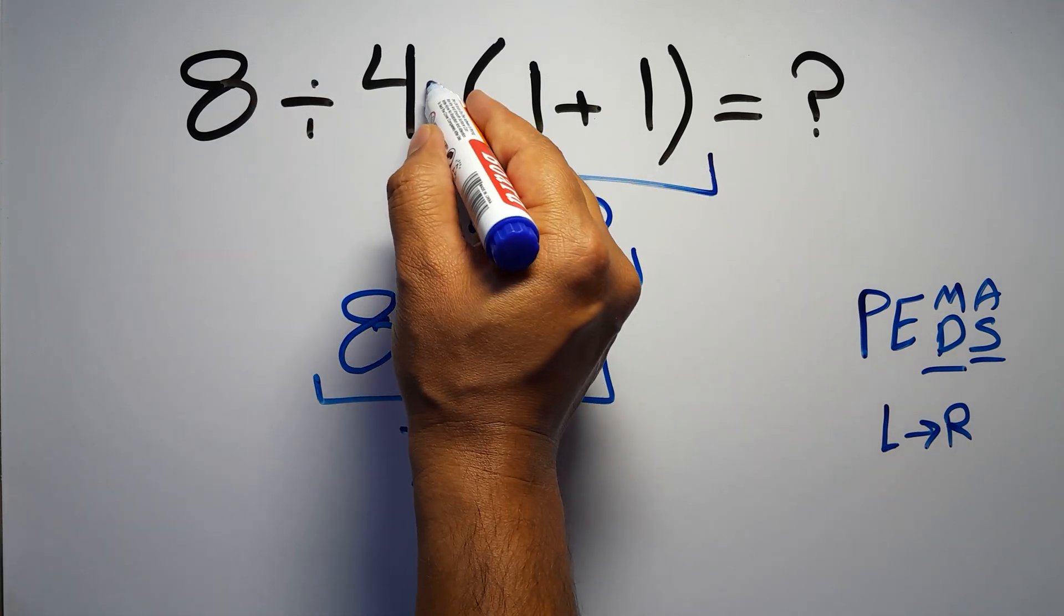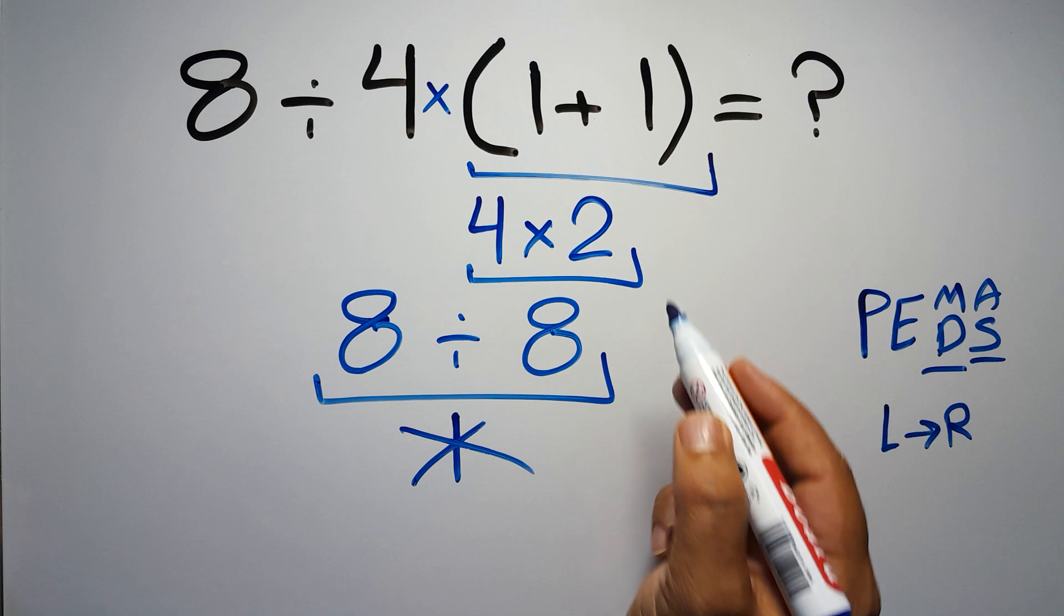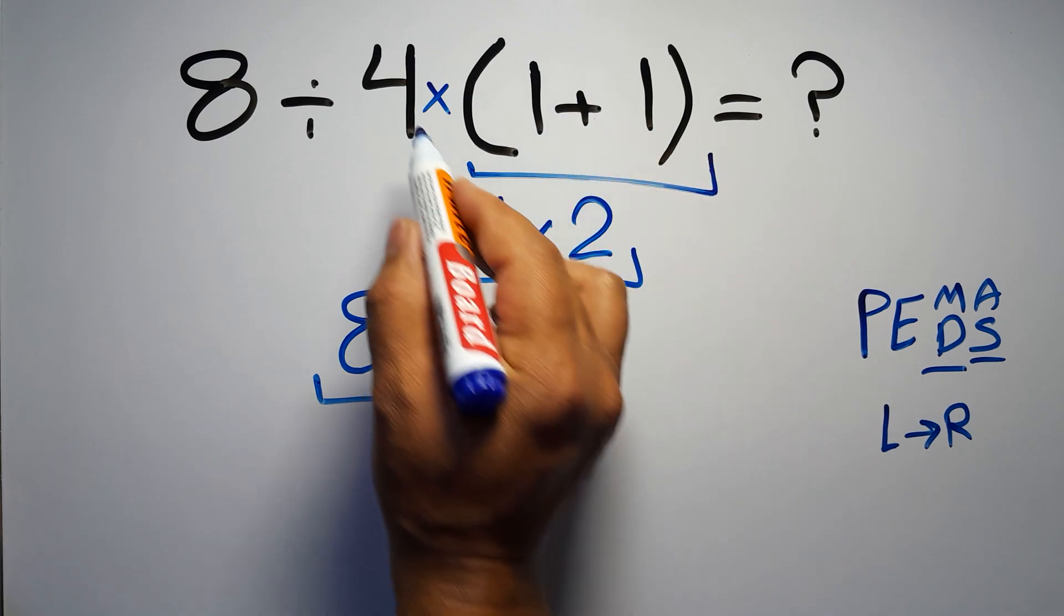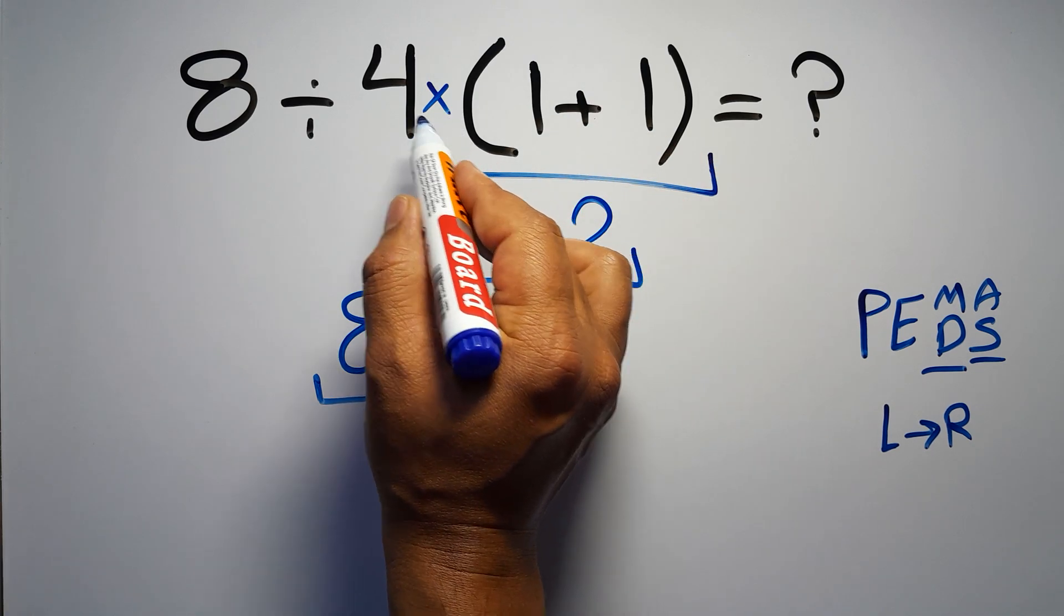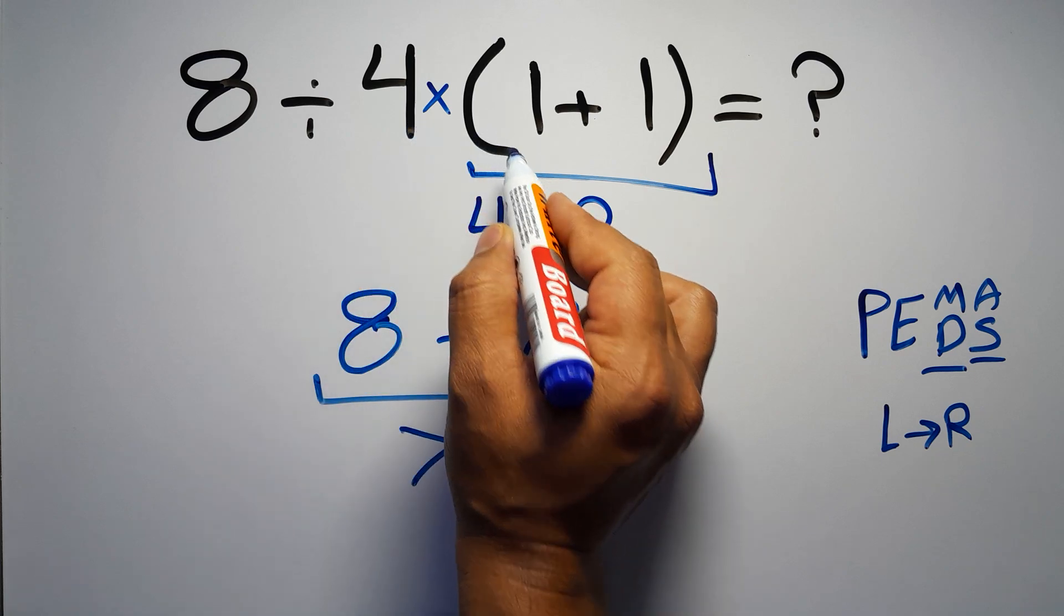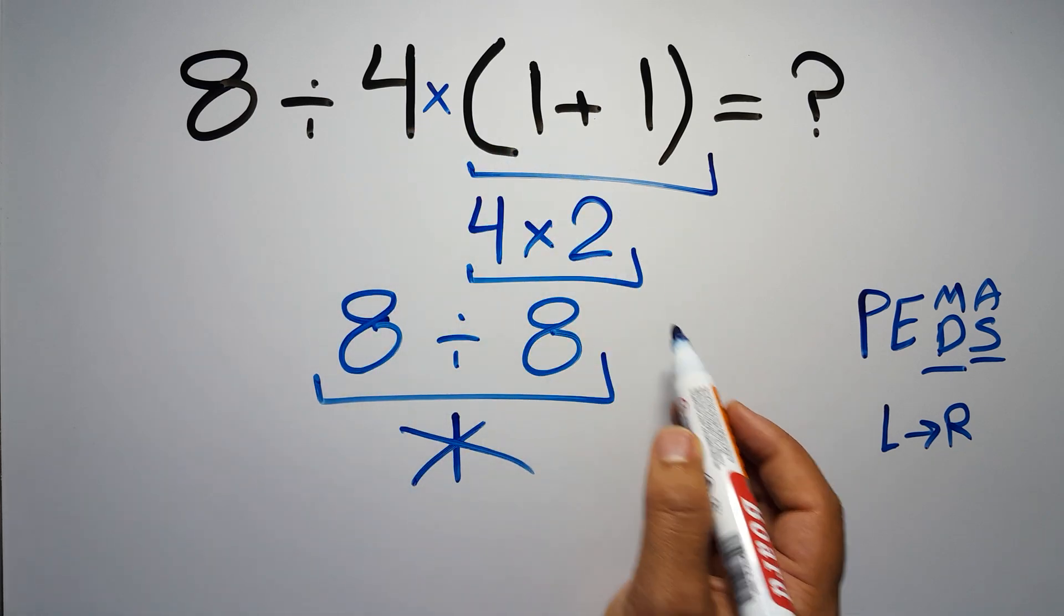In this expression, we have one division, one multiplication, and one parentheses. Inside these parentheses we have one addition. Here we have a multiplication because in mathematics when a number is placed next to parentheses it means multiplication, and we usually don't write a multiplication sign for brevity.